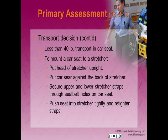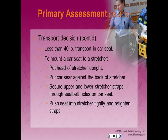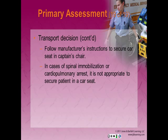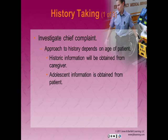Pediatric patients weighing less than 40 pounds should be transported in a car seat. Choose a seat appropriate to the patient's weight. To mount a car seat to a stretcher, place the head of the stretcher upright, place the car seat against the back of the stretcher, and secure it with the stretcher straps through the seat belt portions of the car seat. Push the car seat tightly against the stretcher and re-tighten the straps. Children younger than one year must be transported in a rear-facing position because of the lack of neck muscles. In cases of spinal immobilization or cardiopulmonary arrest, it is not appropriate to secure a patient in a car seat.